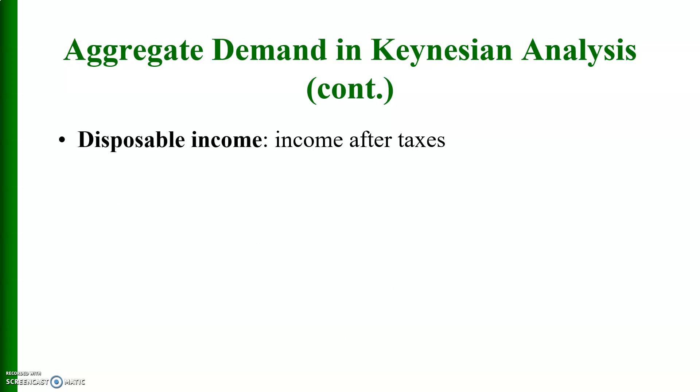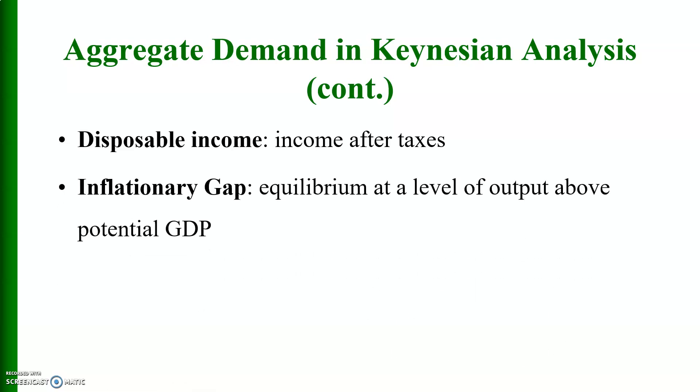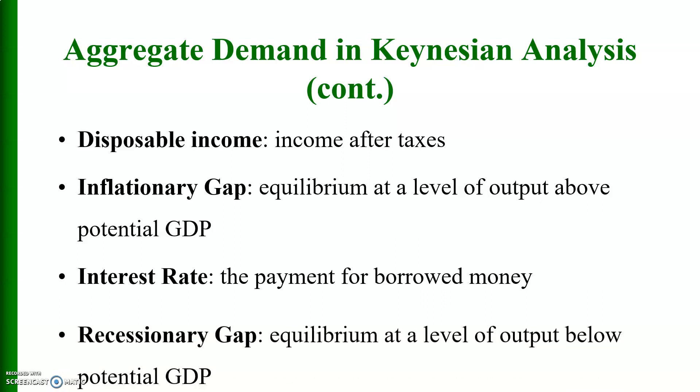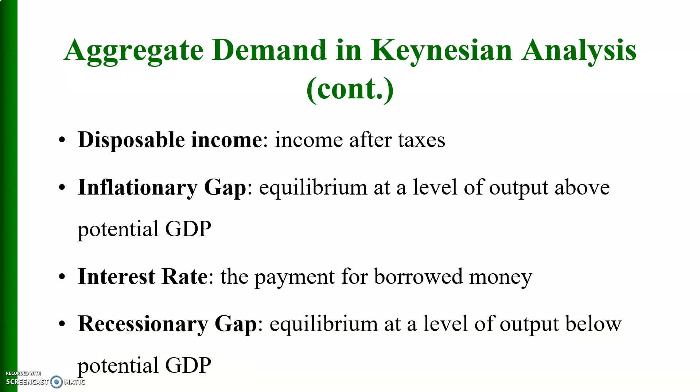Key terms: Disposable income means income after taxes — when you deduct personal taxes from your income you can dispose of it. Inflationary gap is the equilibrium at the level of output above the full employment GDP or potential GDP. Interest rate is the payment for borrowed money. Recessionary gap, or deflationary gap, is the equilibrium at the level of output below the full employment output or potential GDP.